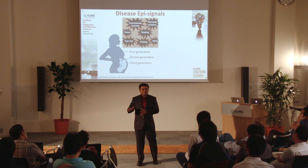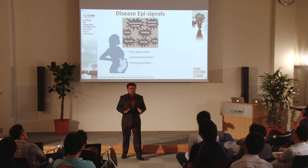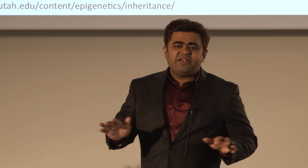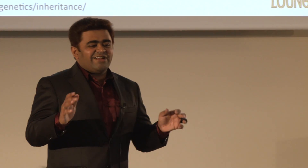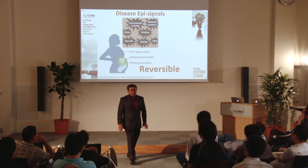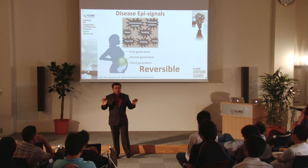That doesn't stop there. We humans also have the same situation. Several disease-causing epigenetic signals — like environmental toxicants, stress, smoking, or drinking — are very bad to our body, and they leave a mark not only on us, but also on our children and even grandchildren. So for some of you who are afraid to be blamed by your child or grandchild, please don't worry — it is reversible. There is a way to reverse the bad epigenetic mark.